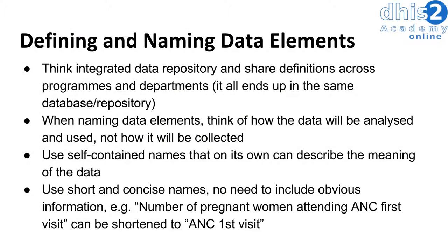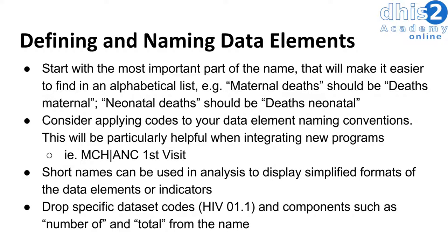There are some additional principles we want to follow when naming our data elements. We also want to make sure that we start with the most important part of the name — this will make it easier to find in an alphabetical list. For example, if you have different types of deaths that you are classifying, you should start with the term 'deaths'. This will allow you to find all of the deaths grouped together.